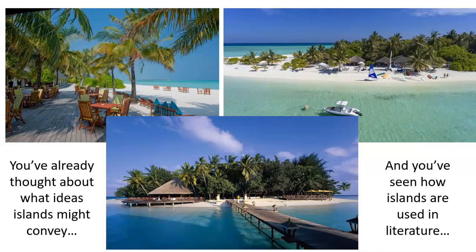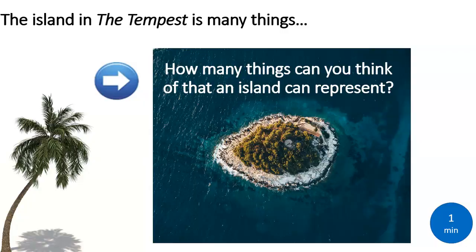Let's move on then. We've already thought a little bit about what islands might convey and explored what an island setting is all about in terms of lots of different literature. Let's then think about islands in the Tempest. I'm going to give you one minute — you can pause this film. How many of these things can you think of that an island might represent?